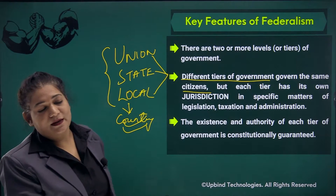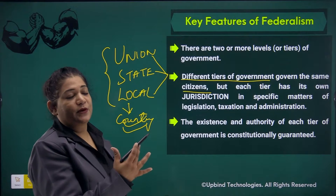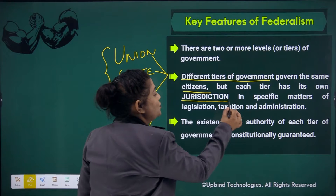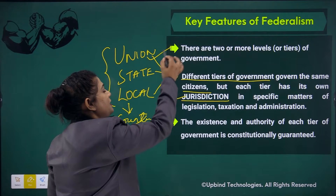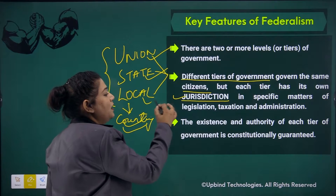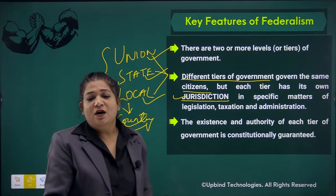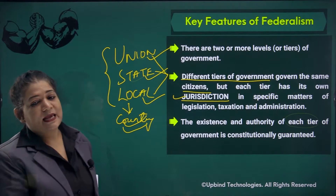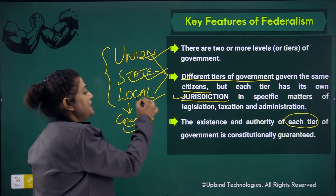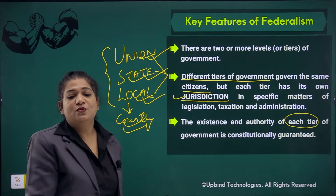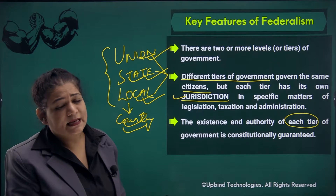Jab alag-alag tier pe government run hoti hai, woh aapka federal type of government hai, lekin unka jurisdiction alag hoga — yani union ka government alag hoga, state ka government alag hoga aur local ka government alag hoga. Har tier jo hai aapki government ka — chahe union ho, chahe state ho, aur chahe local ho — usko constitution ne guarantee kiya hai.